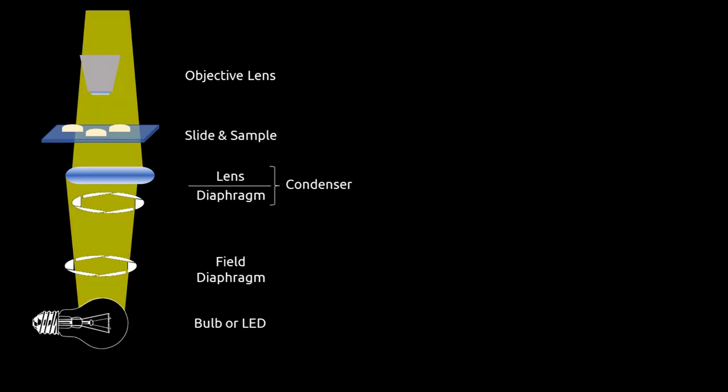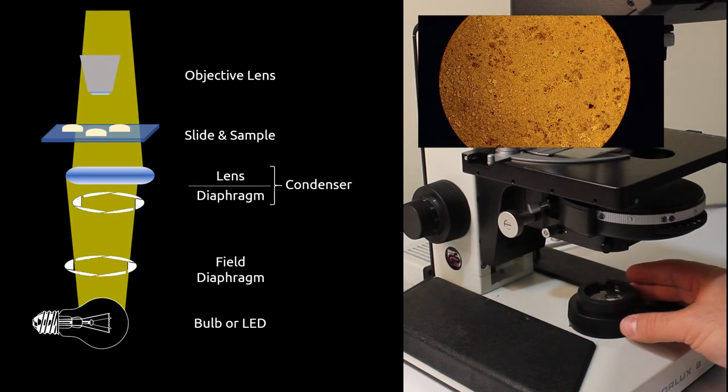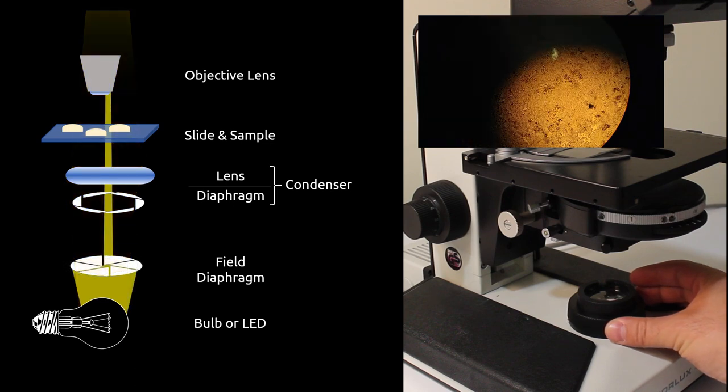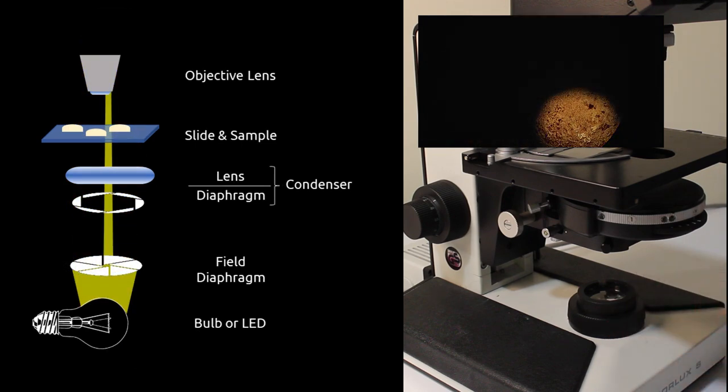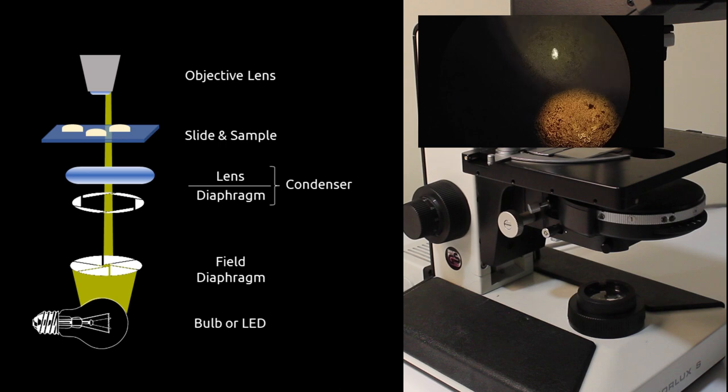The first step in focusing the condenser is to close the field diaphragm by rotating the knob around the illumination source. If your system is near alignment, a hexagon should appear in the image. If it is poorly aligned, an indistinct bright point should appear.